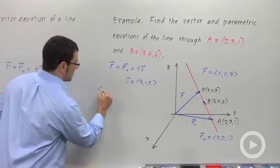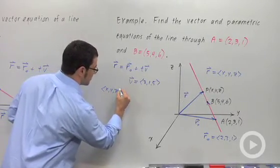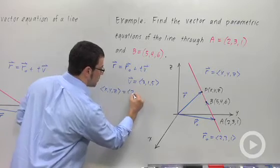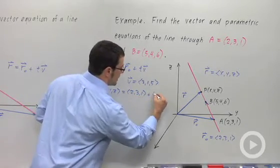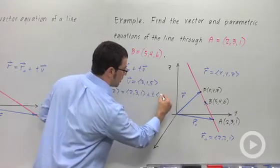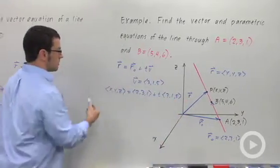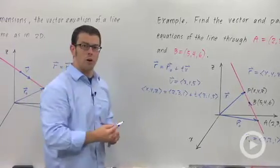Then our equation becomes (x, y, z) equals (2, 3, 1) plus t times (3, 1, 5). This is the vector equation for our line.